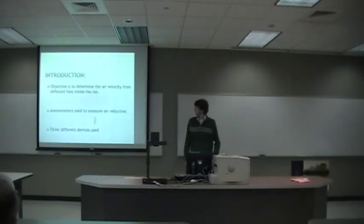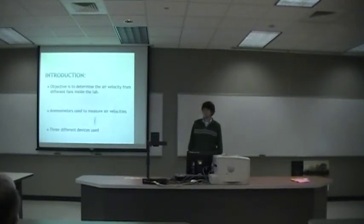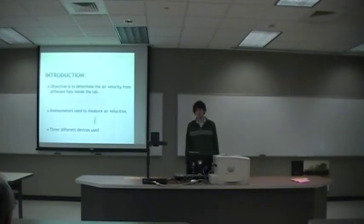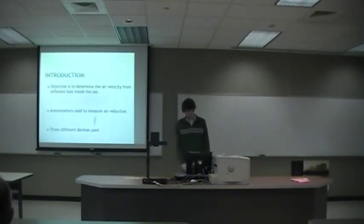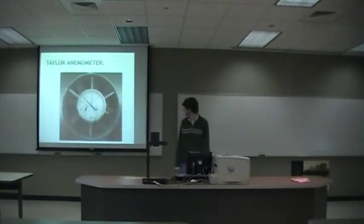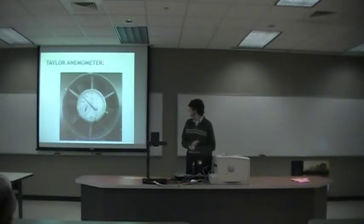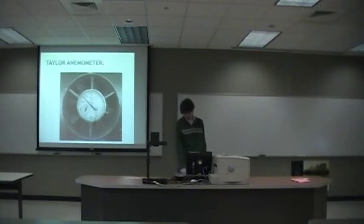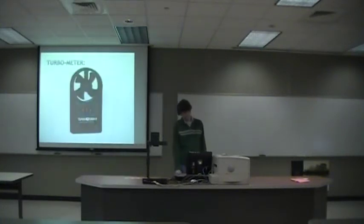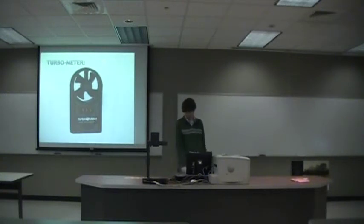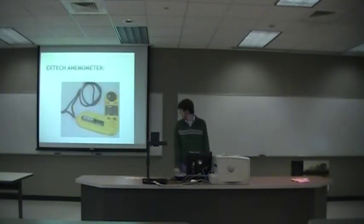An overview of what we did is we've been trying to determine air velocity of different fans down inside the lab. In order to determine air velocities we used three different anemometers. The first one is the Taylor anemometer, which is pretty big — it gives you a reading in feet and you time how long it runs. The other two are the Turbometer, which gives a reading in meters per second, and finally the X-Tech anemometer.